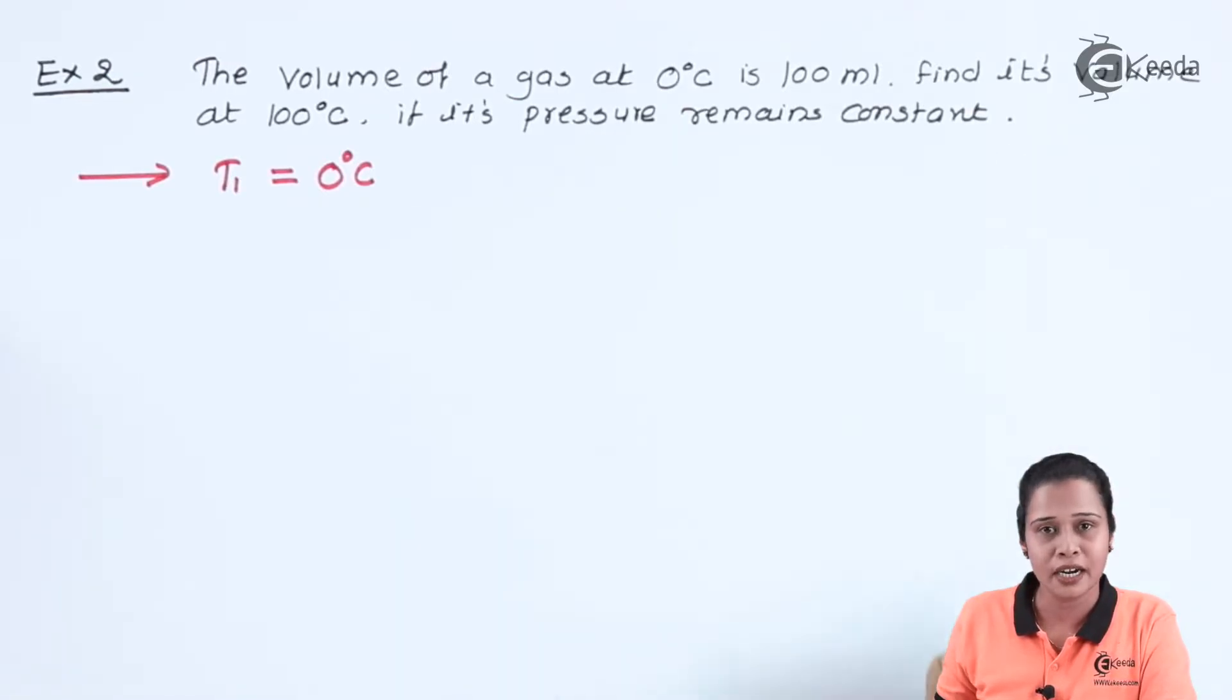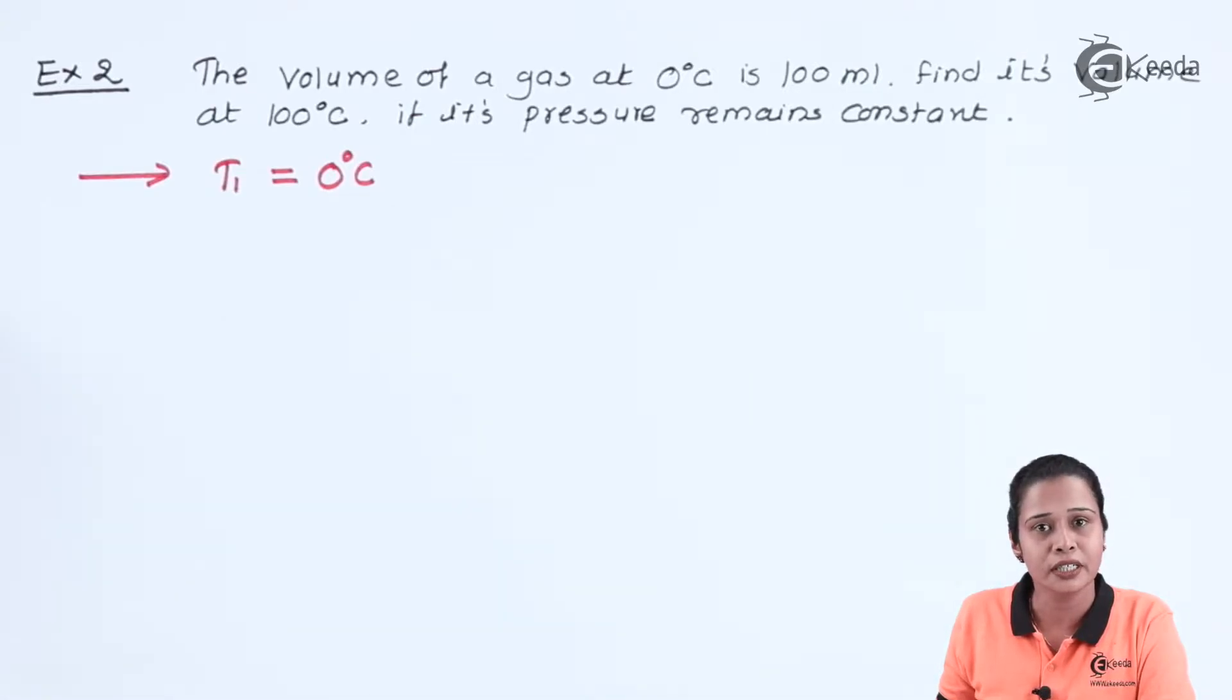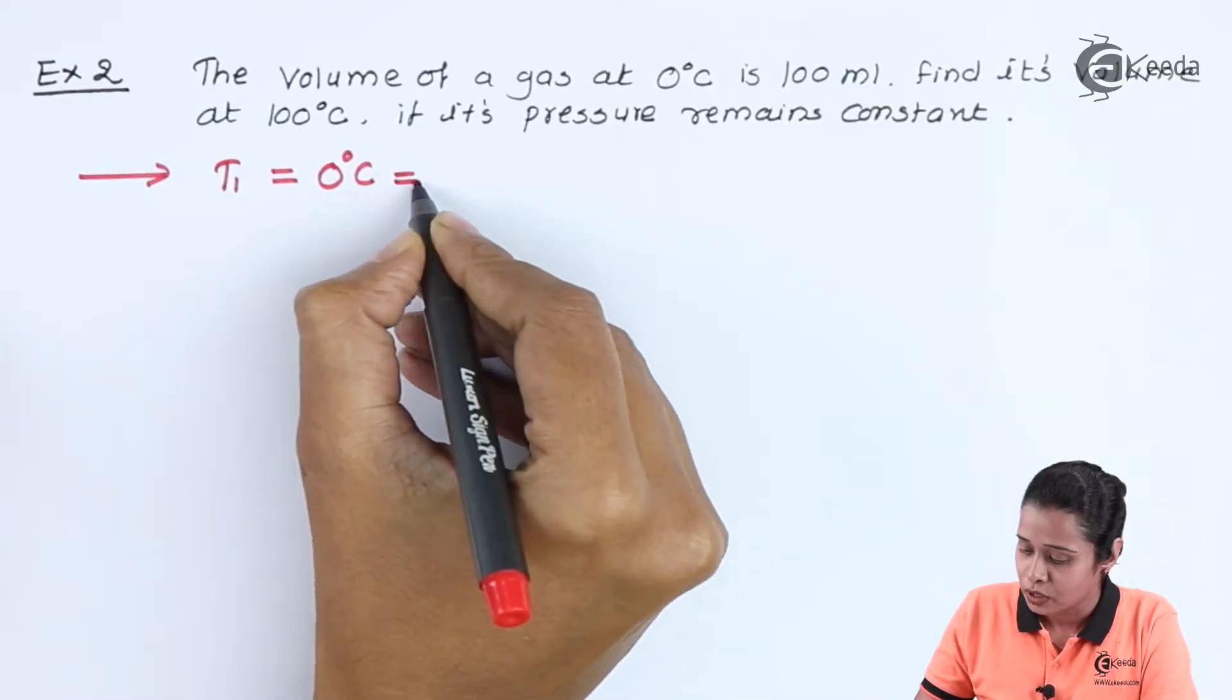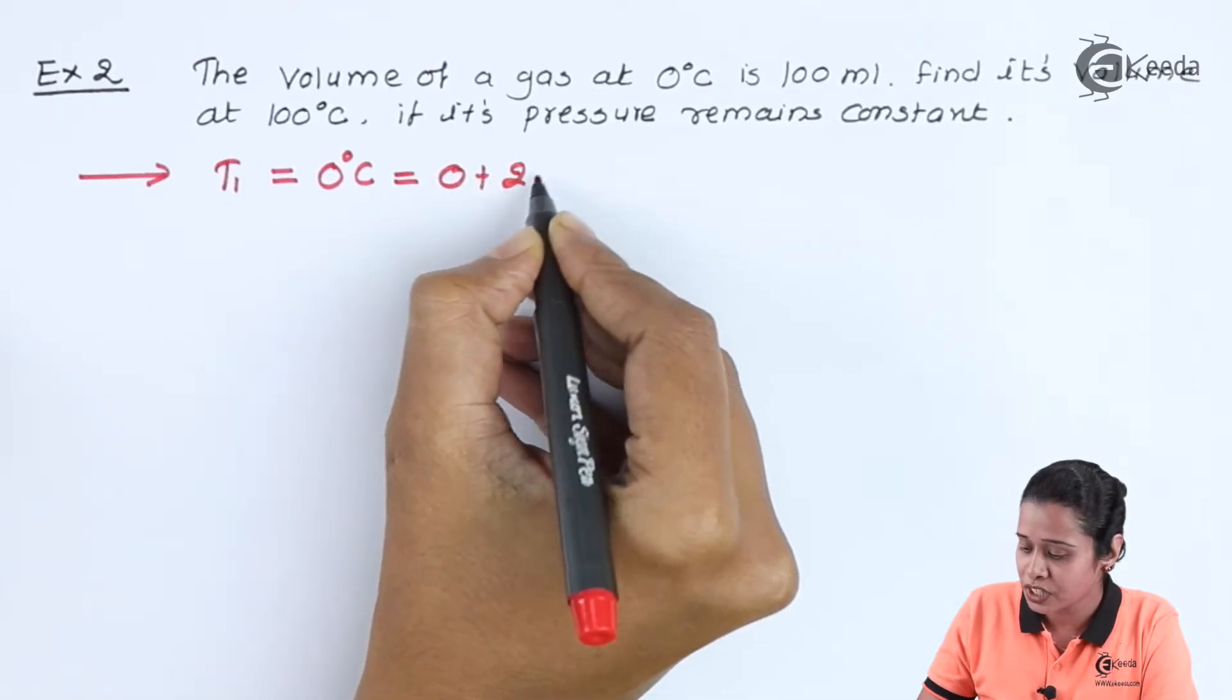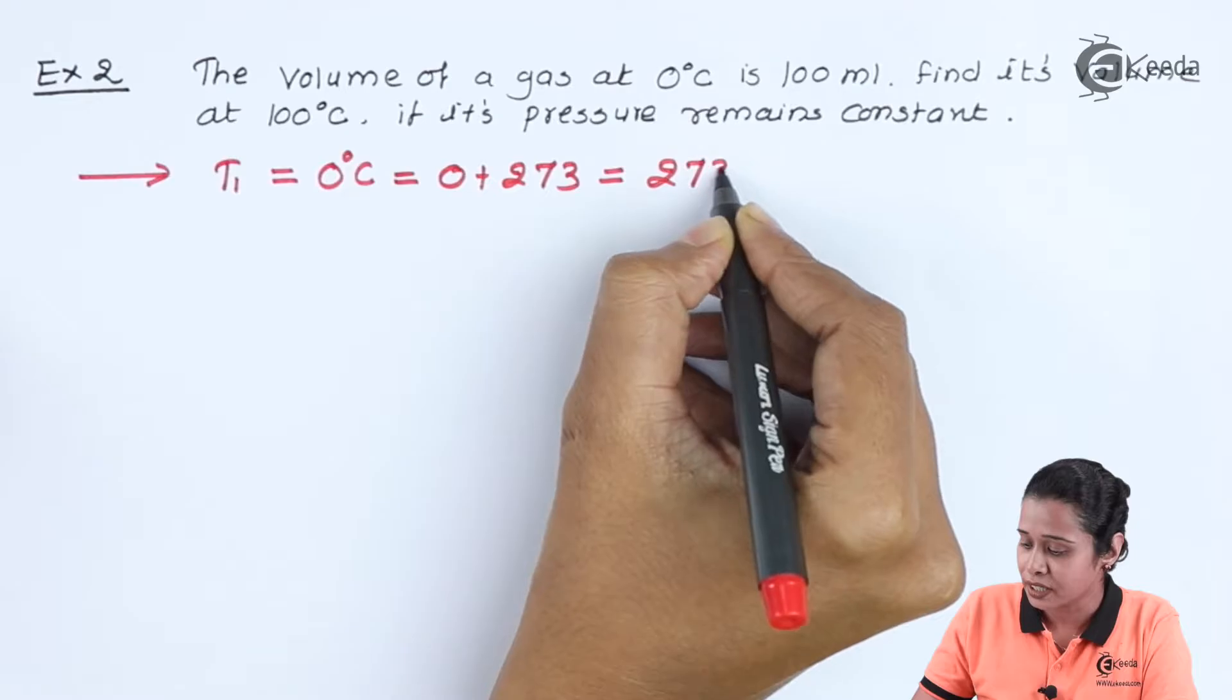Let us start with given quantity. T1 is 0 degree Celsius. Let us convert it into Kelvin: 0 plus 273 which is equal to 273 Kelvin.